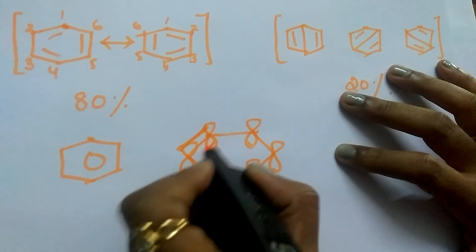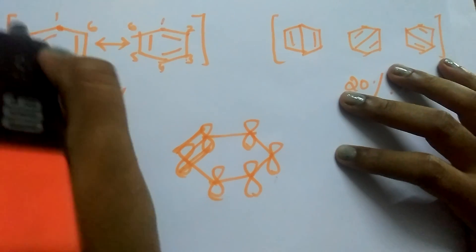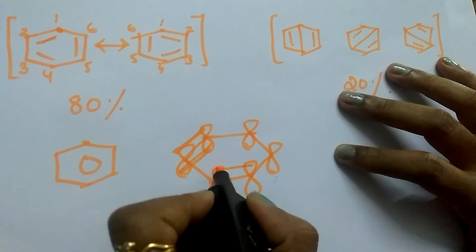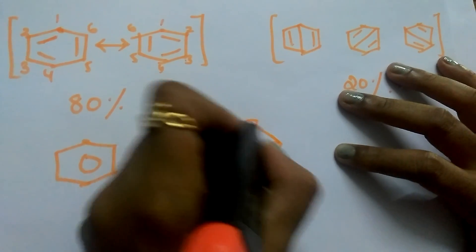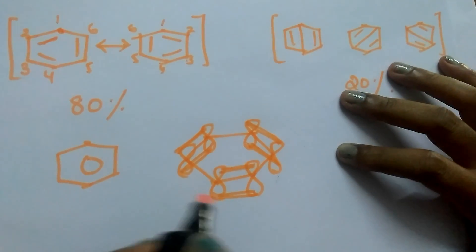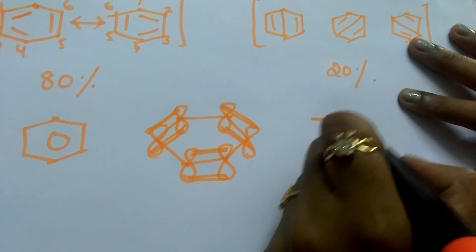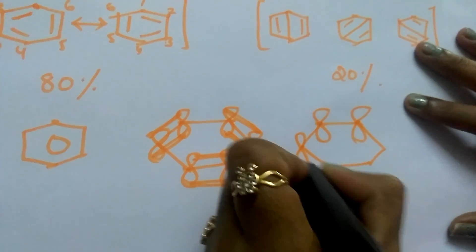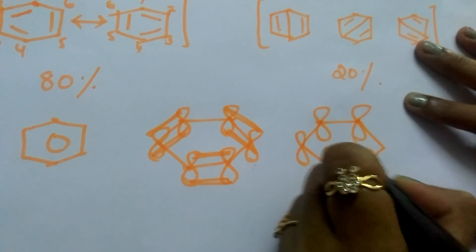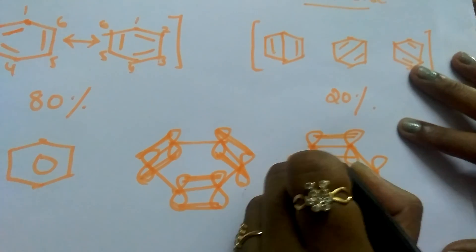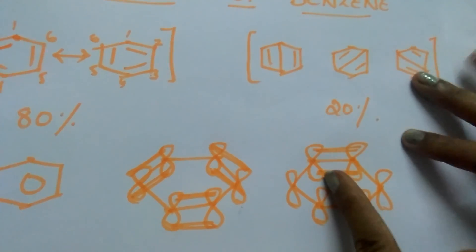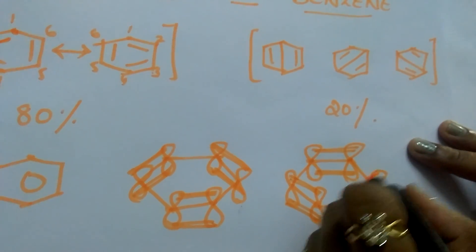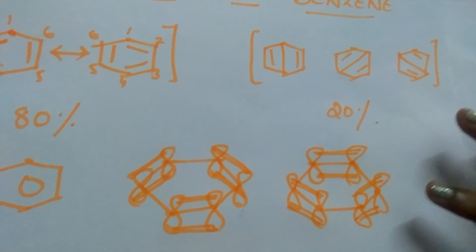These p-orbitals overlap and form the pi bonds. If these two p-orbitals overlap they form the pi bond, and similarly these two p-orbitals overlap and form the pi bond.